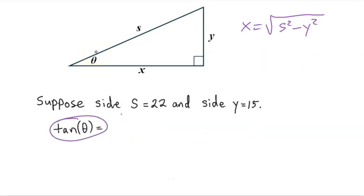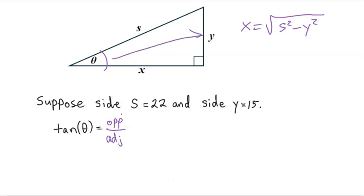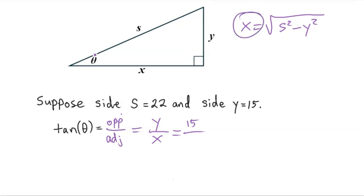In this last example, we want to identify the tangent of theta. The tangent of theta is opposite over adjacent. In this situation, adjacent is X and opposite is Y. We need to do Y over X. We're given Y which is 15, but we do not know X, so we need to find X given the hypotenuse and the other leg. It's going to be the square root of 22 squared minus 15 squared.